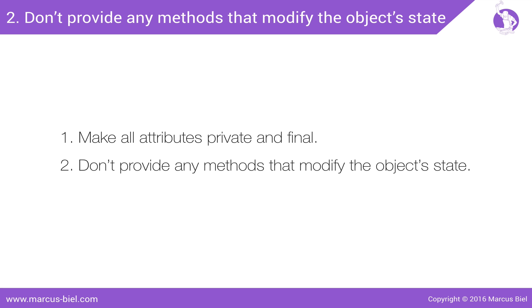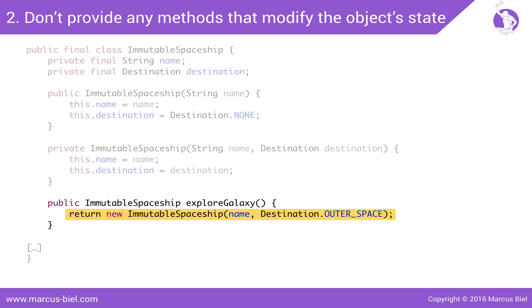Second, we must not provide any methods that modify the object's state. For any change that you want to apply to your immutable object, you have to provide a method that returns a new object. Attributes that do not change, like name in this case, can be copied from our current object. Attributes that do change, like destination in this case, have to be initialized with a new value instead.